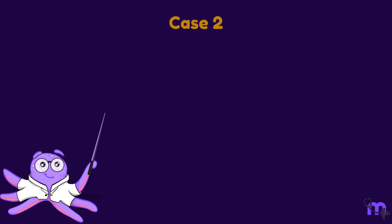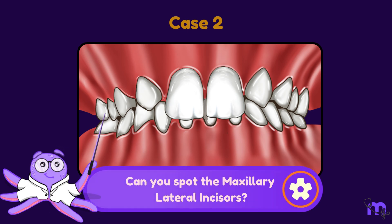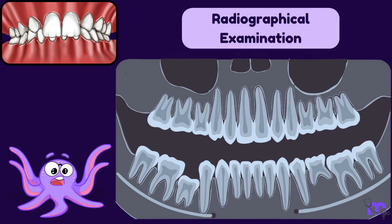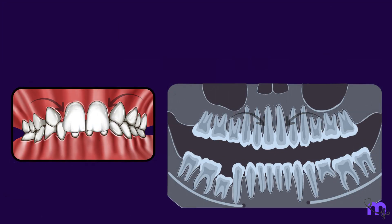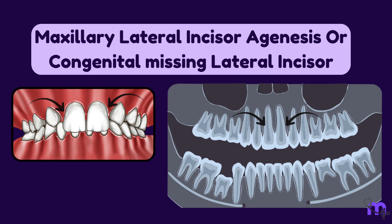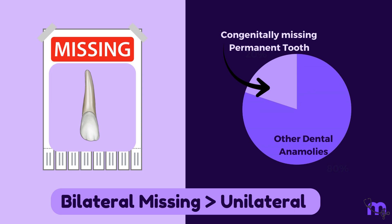Now let's direct our attention to another image. Can you spot the maxillary lateral incisor? It is missing. Upon examination using a radiograph of the corresponding area, there is a complete lack of any evidence of this tooth. What we're observing is a case of maxillary lateral incisor agenesis, or congenitally missing lateral incisor. It is the most common congenitally missing permanent tooth condition, representing approximately 20% of all dental anomalies. Bilateral missing lateral incisors are more common than unilateral cases.